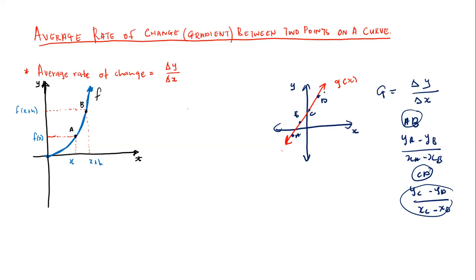Now let's jump to this Cartesian plane where we have function f — a curve. The problem is function f is not the same as function g, simply because one is a curve and the other is a linear function. Is it possible to say the gradient of DA equals the gradient of BC on this curve? It depends — it can be the same depending on the numerical values used.